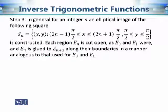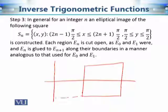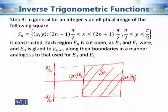In the third step, we define the region S_n running from (2n−1)π/2 to (2n+1)π/2. The y-coordinate (value along the imaginary axis) is from −π/2 to π/2, and the value on the real axis is from (2n−1)π/2 to (2n+1)π/2. We compute the image of this square region under sine z, which is another elliptical region, and again cut the two sides. Then we glue these regions consecutively: E0 with E1, E1 with E2, E2 with E3, and in general E_n with E_{n+1}.